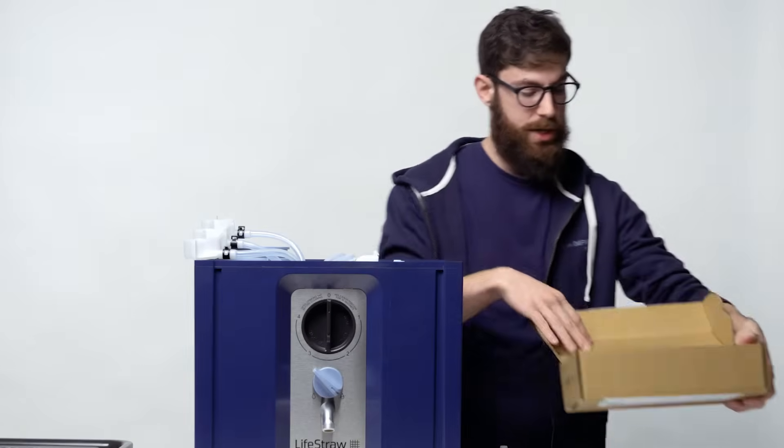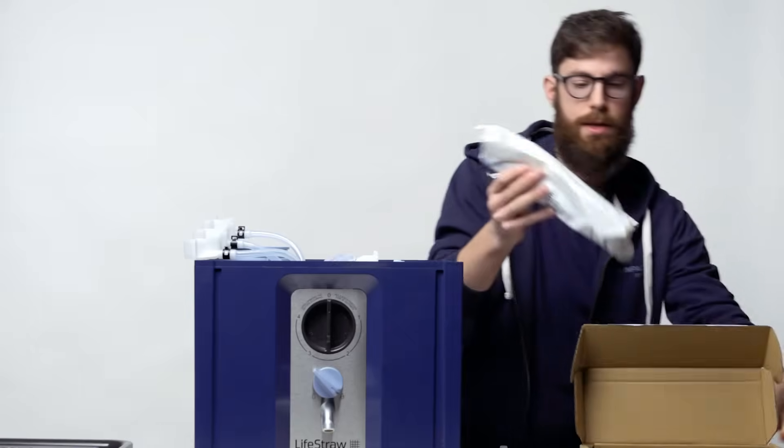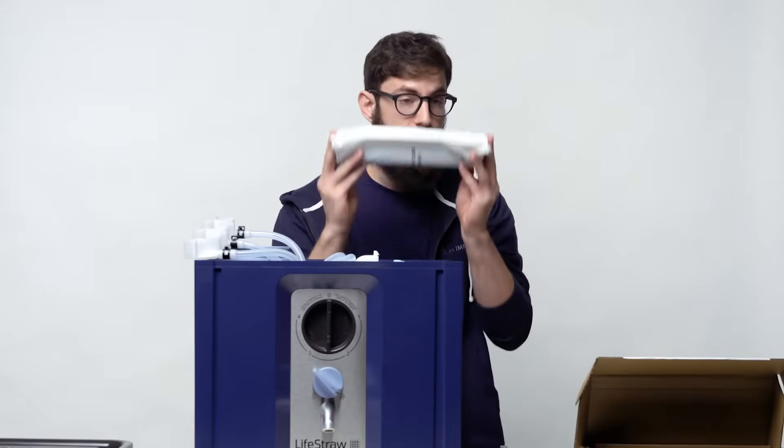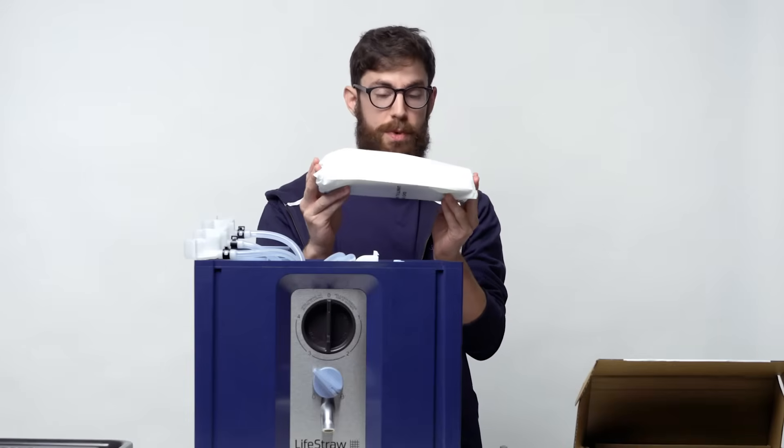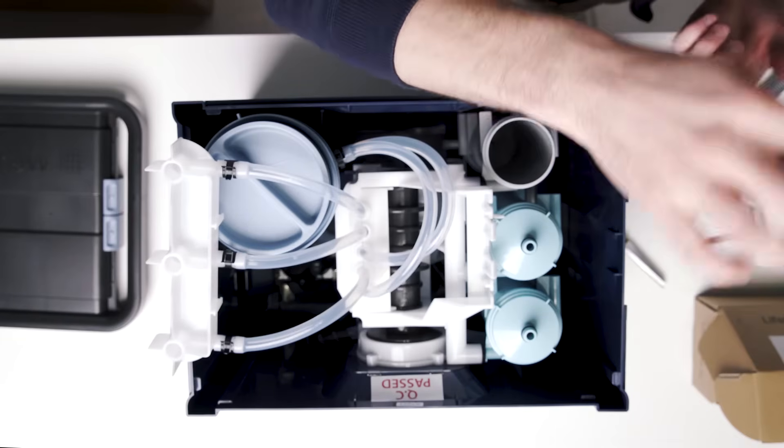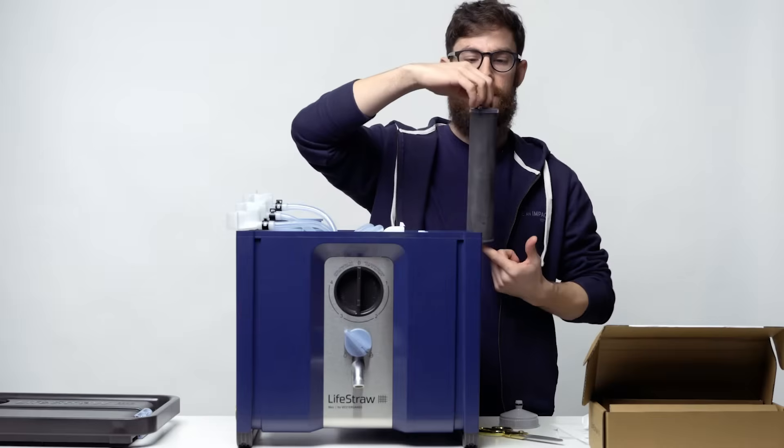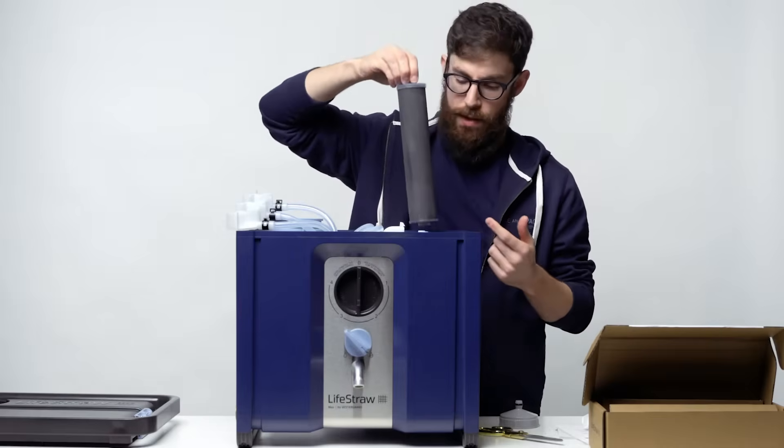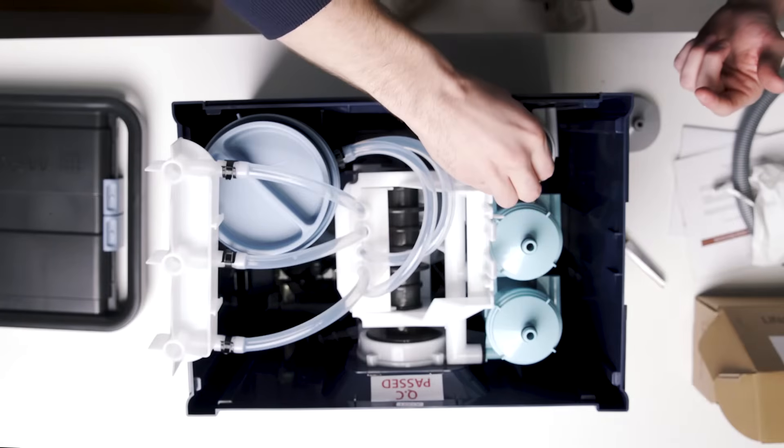The carbon filter comes pre-packaged in a little bag. Don't open this up, don't cut this open until you're ready to use your Max. One side of your Max carbon filter will have a little silicone O-ring on the top. That should be on the top.